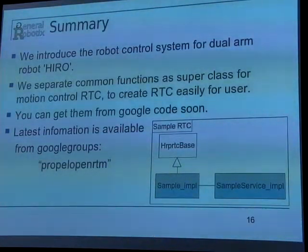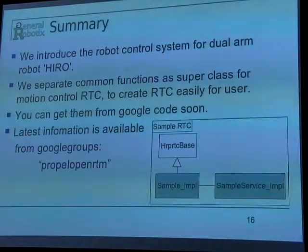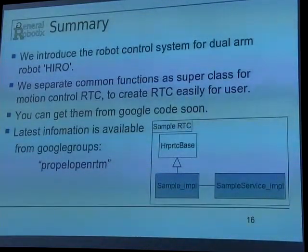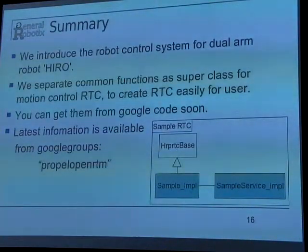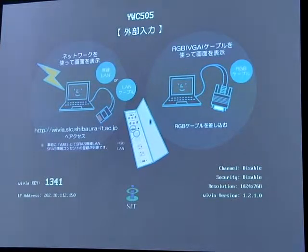We introduced a robot control system for the dual-armed robot Hiro. We separate the common functions as a superclass for motion control RTCs to make it easy for users to create RTCs. You can get them from Google Code soon. The latest information is available from the Google Groups: OpenRTM. Thank you. I have some demonstration, but I have a problem with my machine, so I'm not sure what I can show.